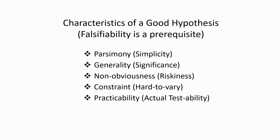Quickly reviewing: a good hypothesis will obey the rule of parsimony or simplicity, it will have great generality, it will be able to make non-obvious predictions, it will be heavily constrained by the data, and it will be actually possible to test its predictions. If you keep these characteristics in mind as you read scientific papers or think about scientific reports or your own hypotheses, you'll not only have a better appreciation for the scientific reasoning involved, but a good idea of how to evaluate your own scientific thinking.